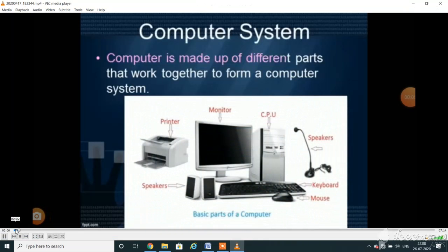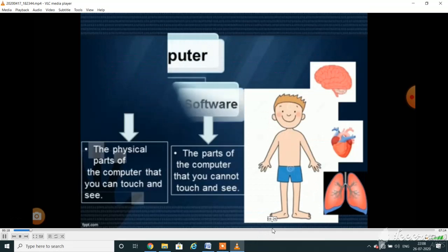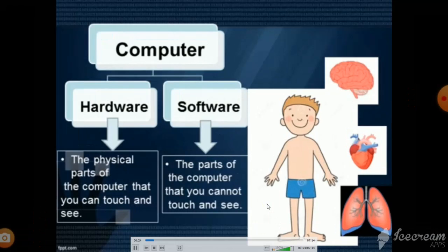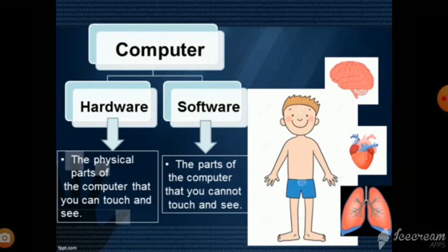Children, previously we have learned that a computer is an amazing machine that can do different types of jobs. It has different parts that work together to form a computer system. The two basic parts of a computer system are hardware and software. Let us learn about hardware. The physical parts of a computer that you can touch and see are called hardware.